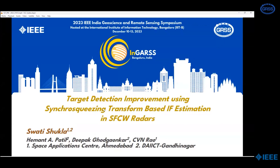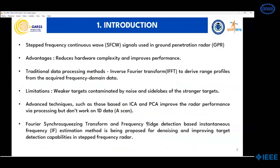I am Swati and today I will be presenting Synchro Squeezing Transform Based IF Estimation for Target Detection Improvement in SF-CW Radars. Step frequency continuous wave signals, popularly known as SF-CW signals, are used in ground penetrating radars. The major advantages are that they reduce hardware complexities and improve system performance. Traditional data processing methods such as inverse Fourier transform are used to derive range profiles from acquired frequency domain data, but that causes weaker targets to be contaminated by noise and side lobes of stronger targets.